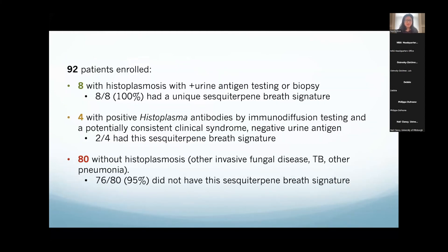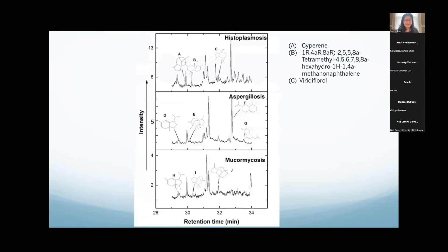We've enrolled 92 patients in this study — set back because of COVID and a freeze on research in Guatemala. Eight of them had histoplasmosis with positive antigen testing or biopsy or culture, and all eight had a unique sesquiterpene breath signature. Four were in an intermediate category with positive histoplasma antibody testing but no positive antigen or culture — two out of four had this sesquiterpene breath signature. 88 patients did not have histoplasmosis and 95% did not have this sesquiterpene breath signature. The metabolites for histoplasmosis are quite distinct from metabolites seen in aspergillosis and Rhizopus microsporus mucormycosis — a totally different signature reflecting its totally different secondary metabolism.